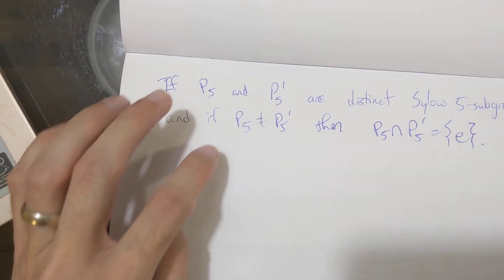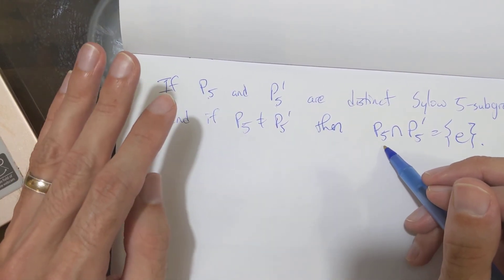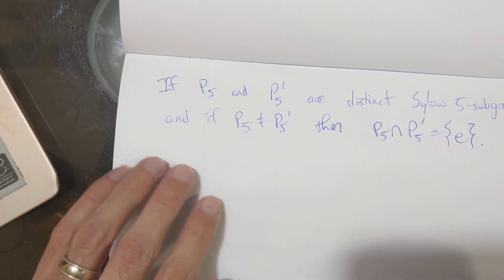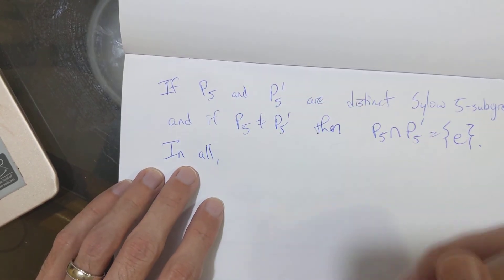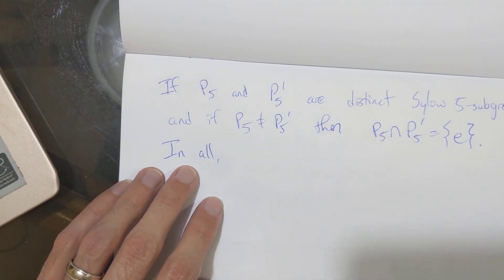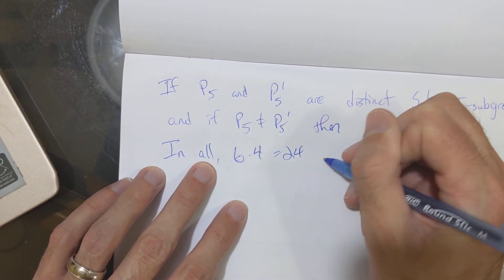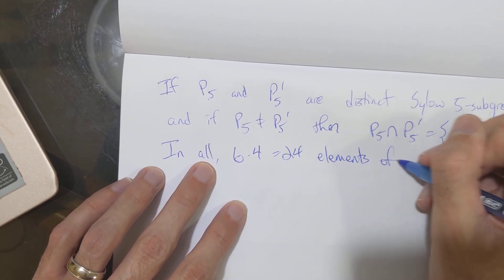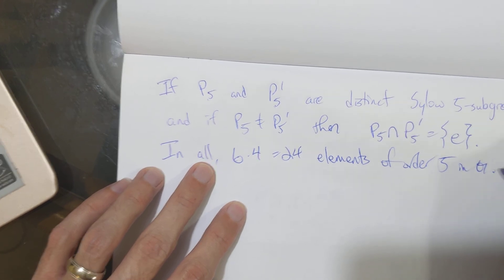Okay. Again, so that means each distinct Sylow 5 subgroup contributes four elements of order five to our group G. Okay. So in all, out of the six, the six Sylow 5 subgroups, we have six times four is 24 elements of order five.